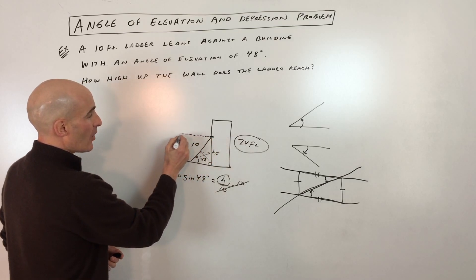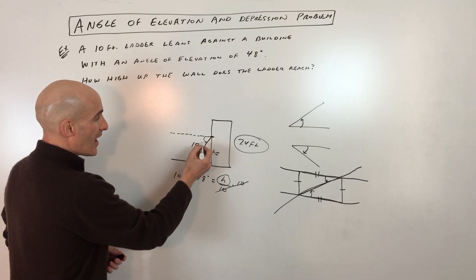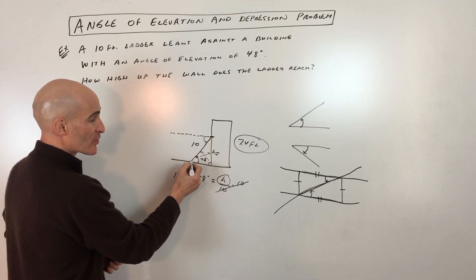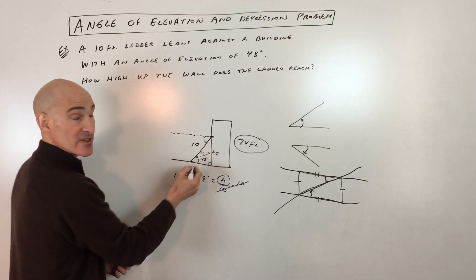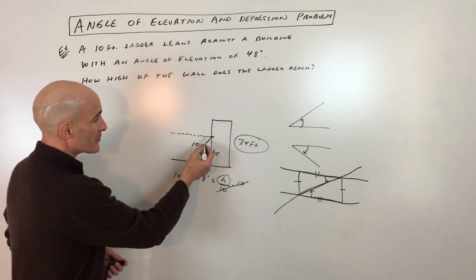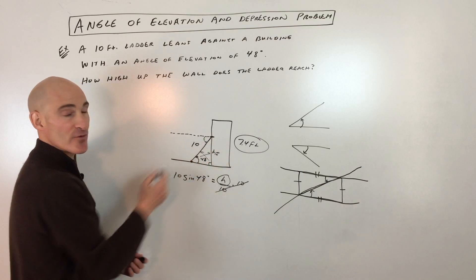And if you extend out like that, they're going to be looking down over here, like at this person at the base of the ladder. These two angles are alternate interior angles and they're going to be equal to one another. So 48 degrees, this would also be 48 degrees.